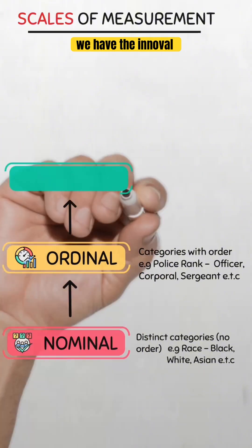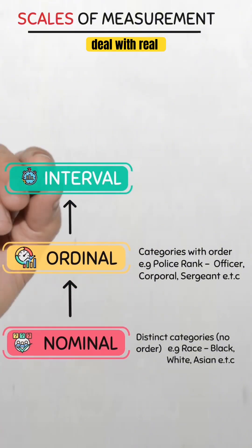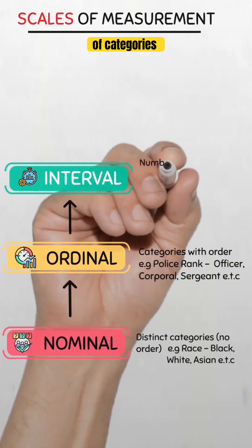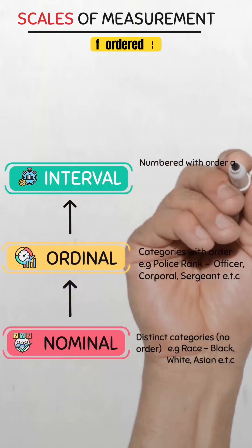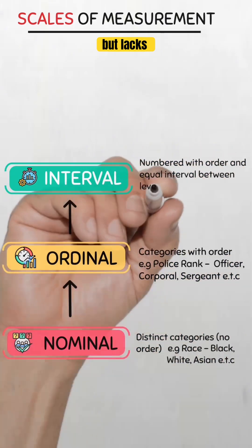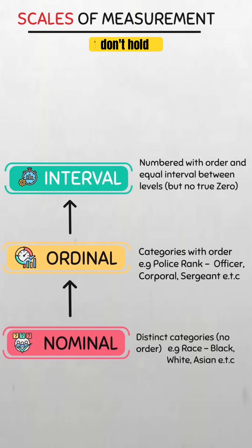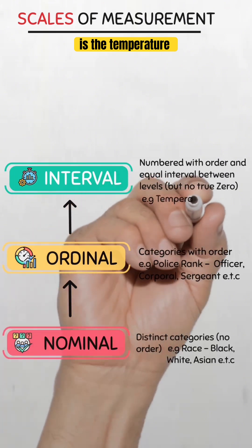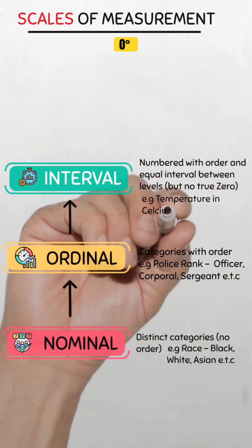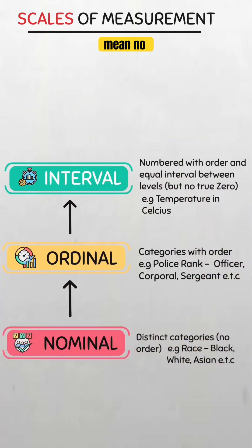Third, we have the interval scale. This is where we start to deal with real numbers instead of categories. It features ordered values and equal intervals, but lacks a true zero point. So you can add and subtract values, but ratios don't hold meaning because the zero point is relative. For example, temperature in Celsius — zero degrees Celsius doesn't mean no temperature, as it is equivalent to 32 degrees Fahrenheit.